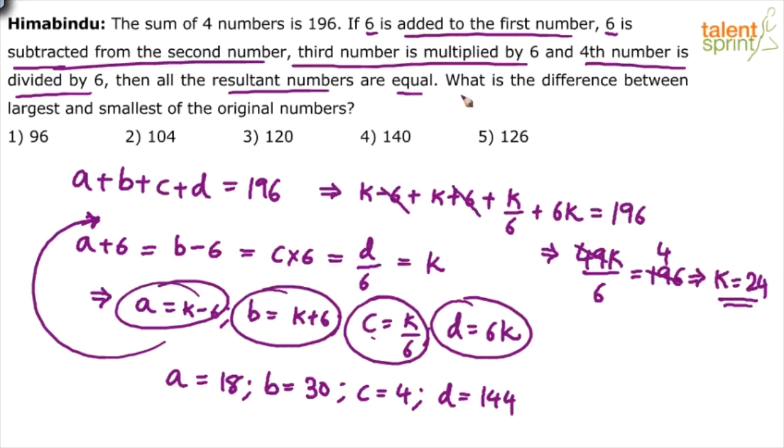What is he asking us to find out? What is the difference between the largest and smallest of the original numbers? These are all the original numbers. What is the largest one? 144. Smallest one? 4. What is the difference between largest and smallest? 144 minus 4, which is equal to 140. So option 4 is your answer. 140.